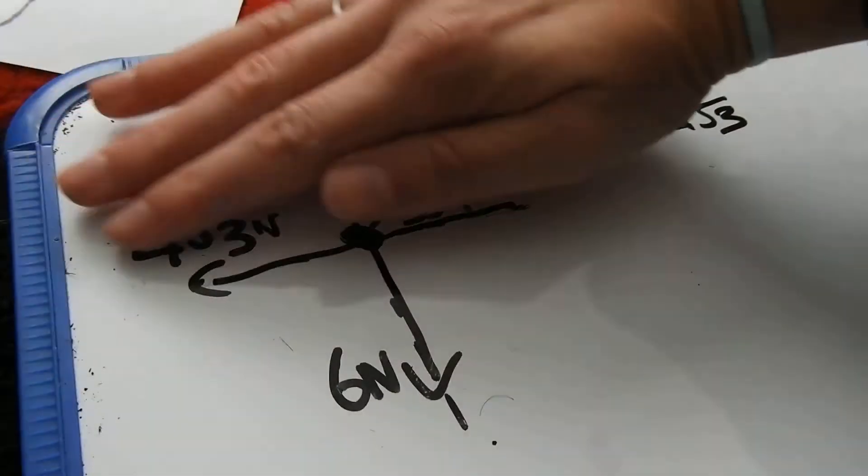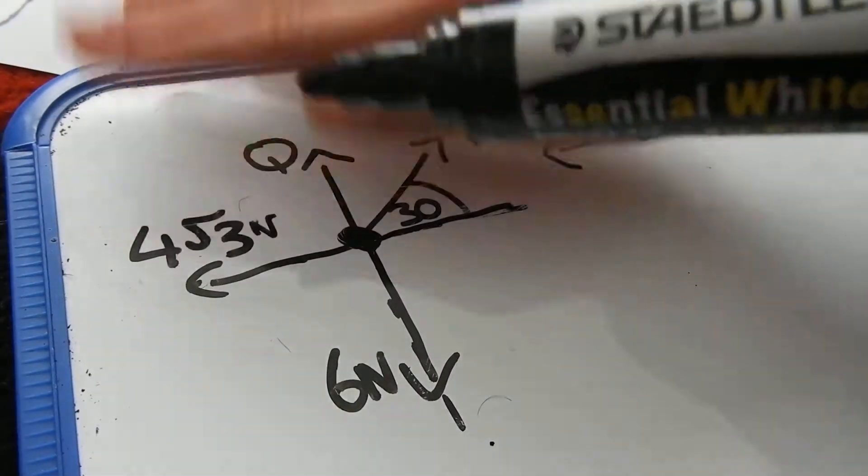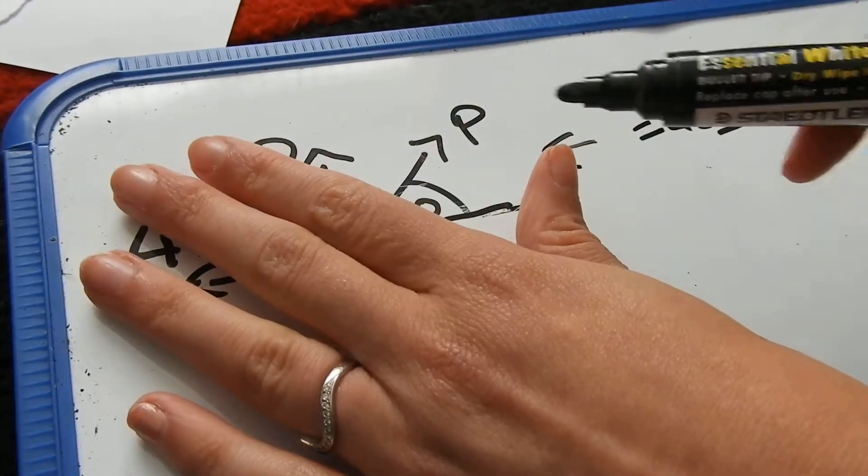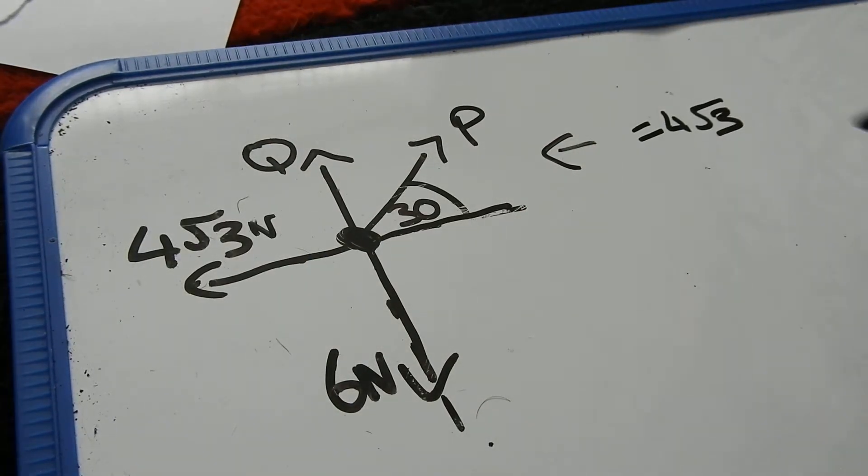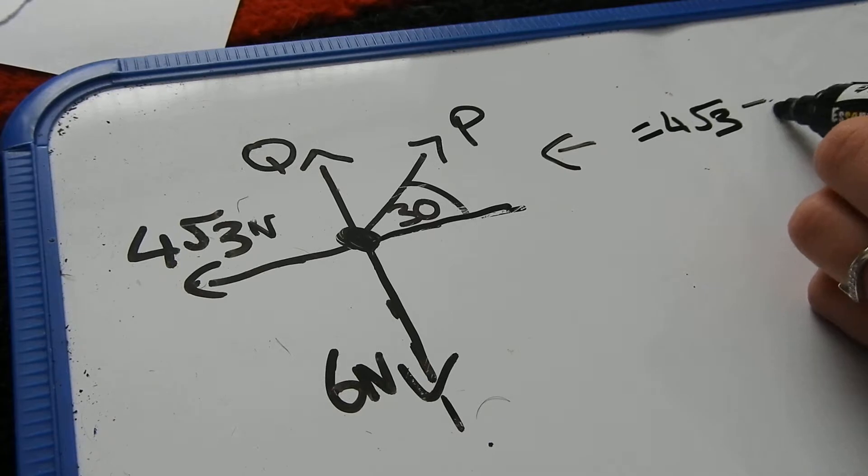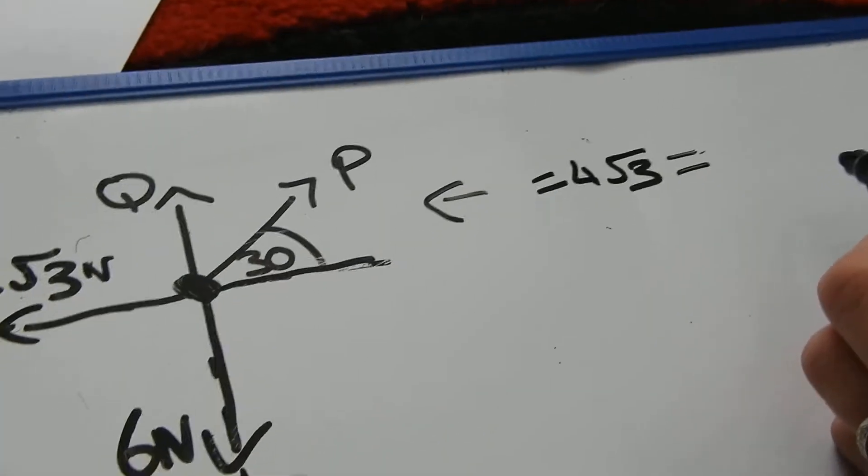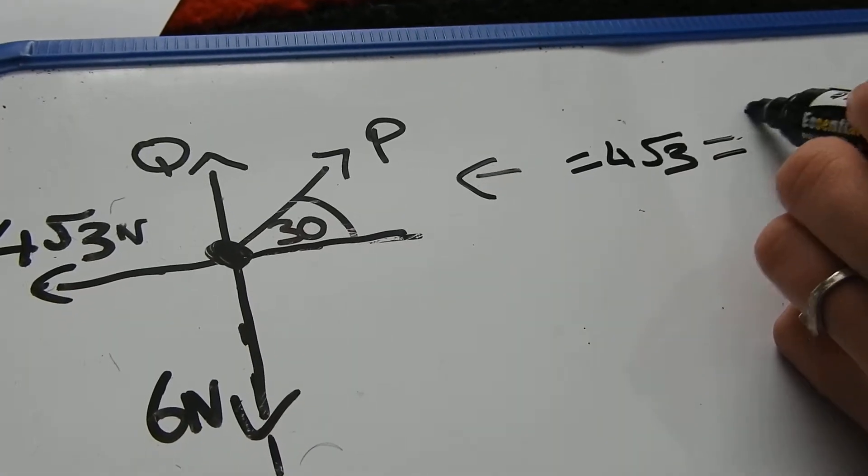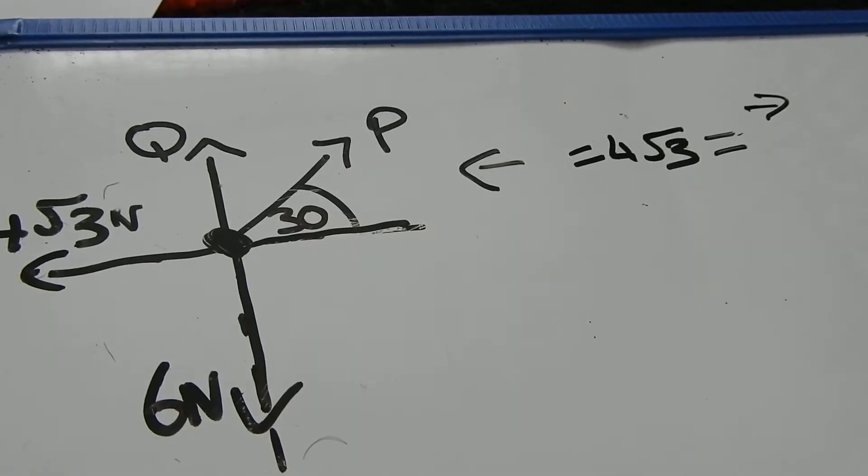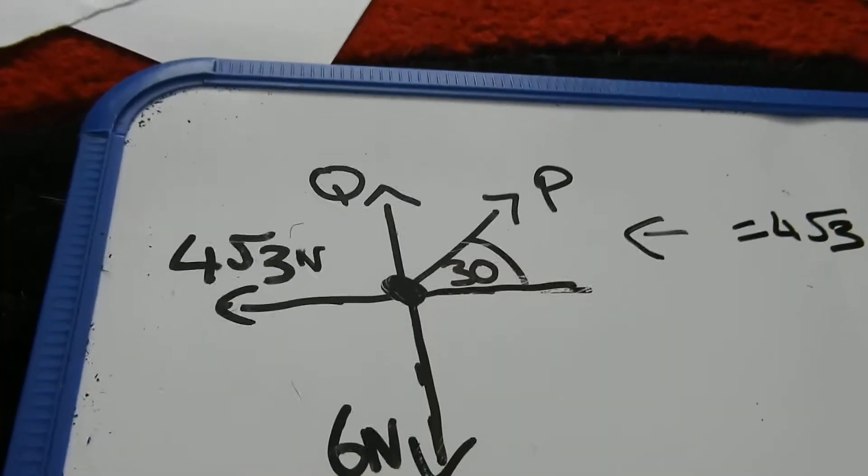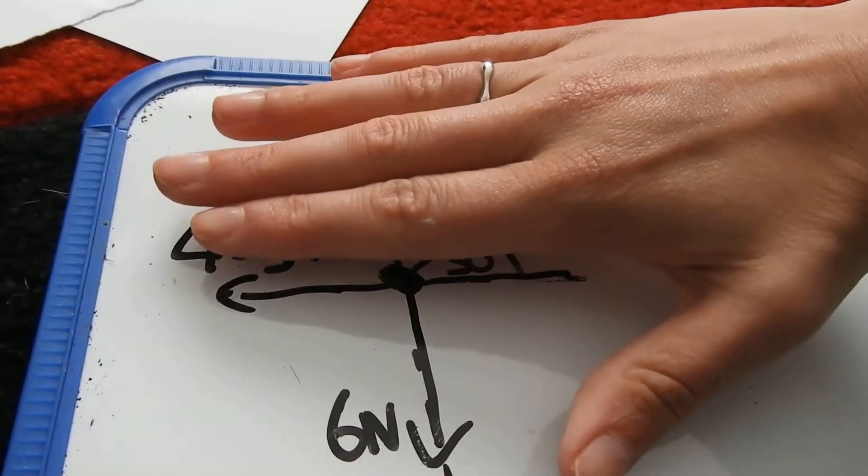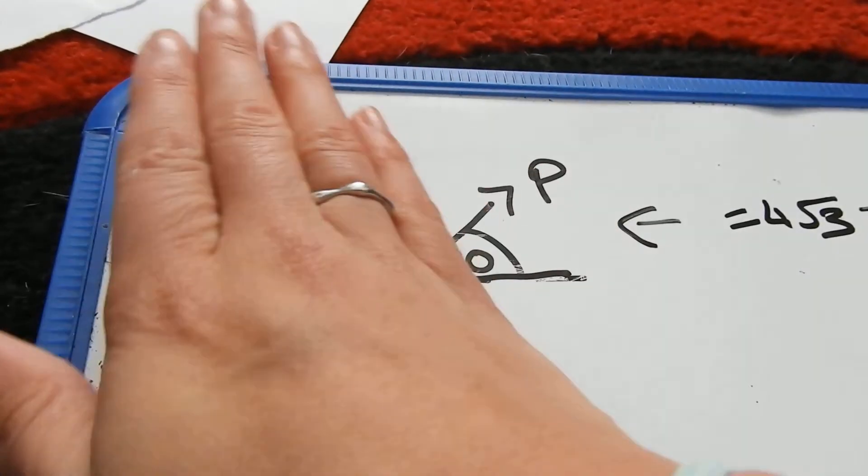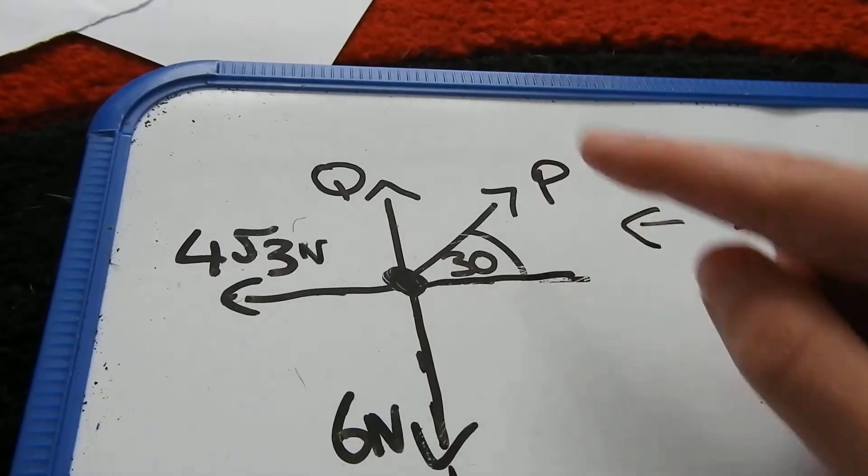Now if I look at any of the other quarters, going down, there's nothing going to the left. And to this side, there's nothing going to the left. So going to the left, we only have 4 root 3. That's going to be equal to what is going to the right. Now we have to work that out. So going to the right, we have nothing in that quarter, nothing in the two bottom quarters.